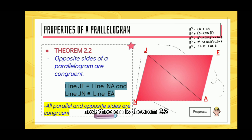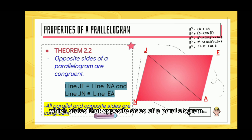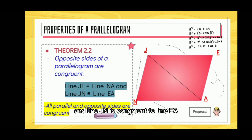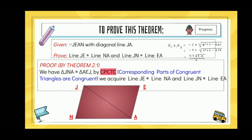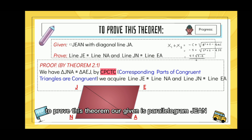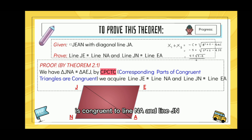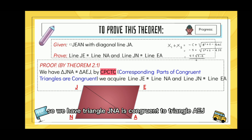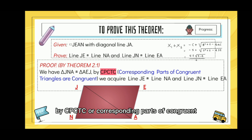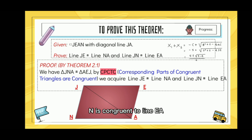Next is Theorem 2.2, which states that opposite sides of a parallelogram are congruent. An example is line JE is congruent to line NA and line JN is congruent to line EA. To prove this, our given is parallelogram JEAN with diagonal line JA. By Theorem 2.1, triangle JNA is congruent to triangle AEJ. By CPCTC — corresponding parts of congruent triangles are congruent — we get that line JE is congruent to line NA and line JN is congruent to line EA.